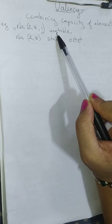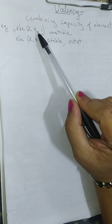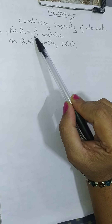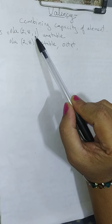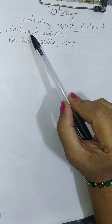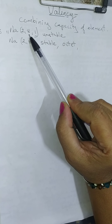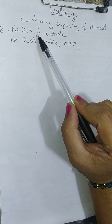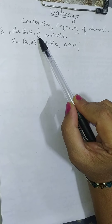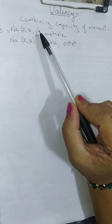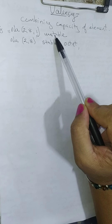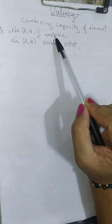It should have either 8 electrons if it is the second orbit, or 18 electrons if it is the third orbit — that is, the outermost orbit should be complete. If it is incomplete, it is unstable.